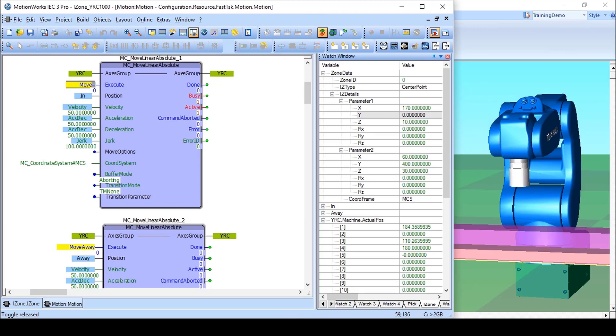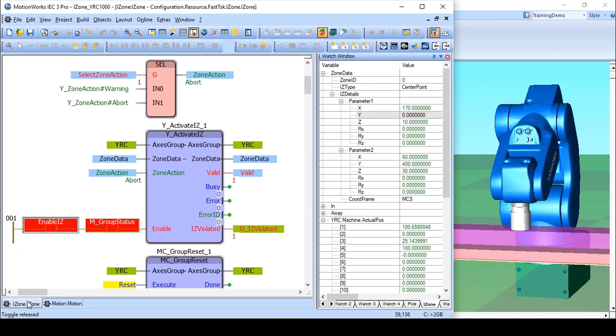You can see the TCP stops right on the edge of the zone while IZ_Violated is true.